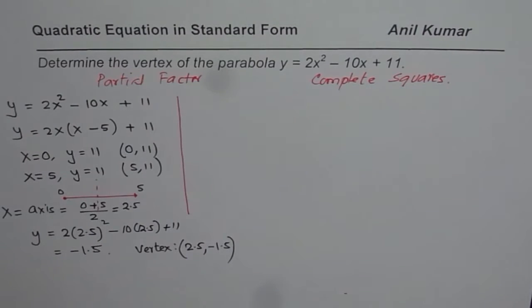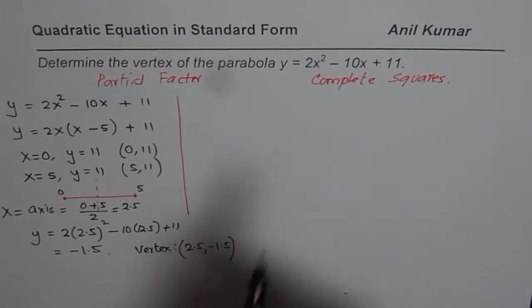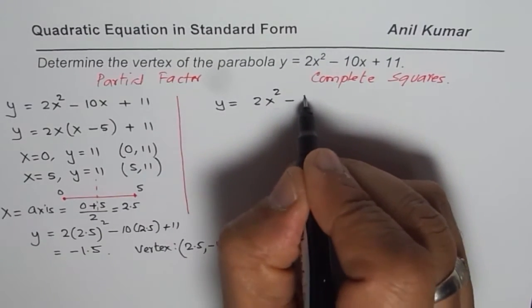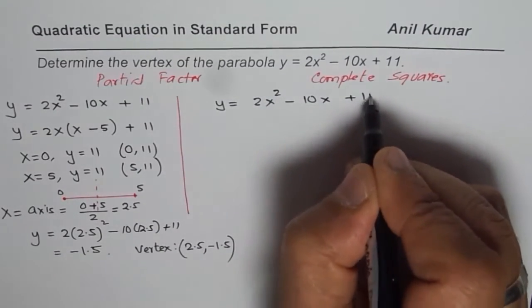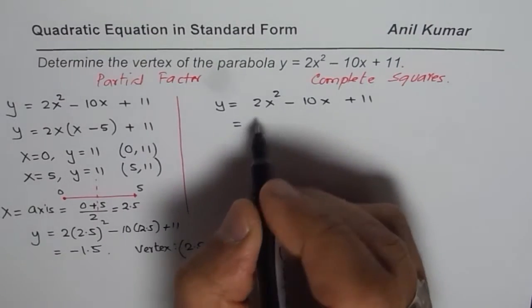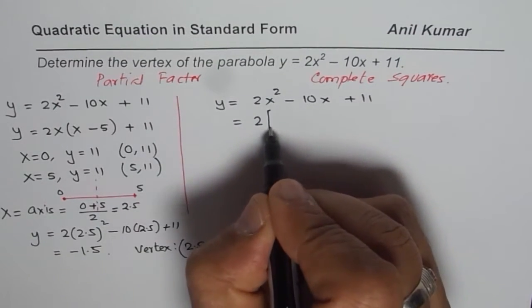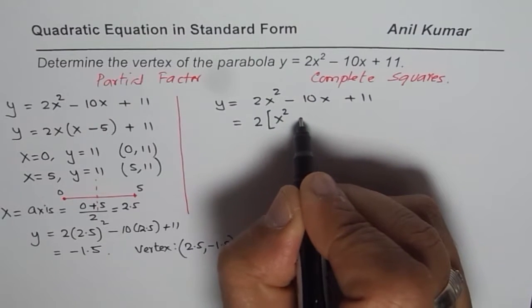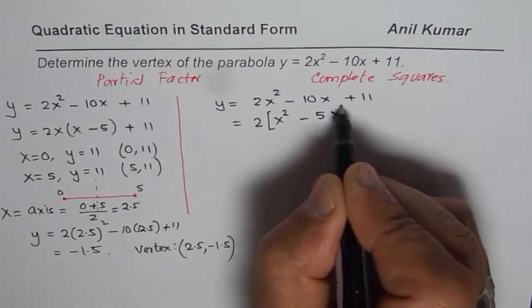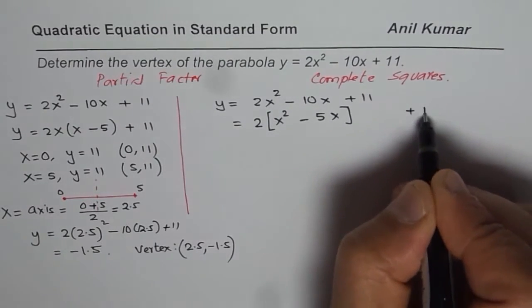Now we'll adopt the second method, which is completing the squares, and see what we get for vertex. Y equals 2x squared minus 10x plus 11 is given to us. So here we'll factor the leading coefficient 2. That is the process. We get x squared minus 5x plus 11, keep it on the side.